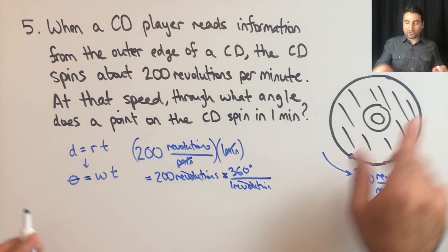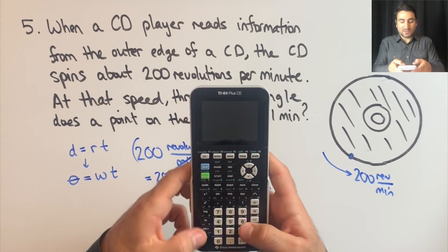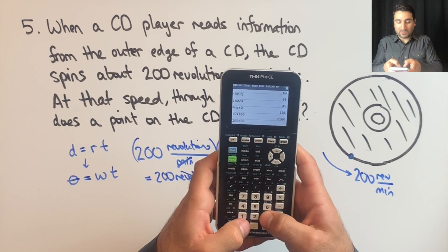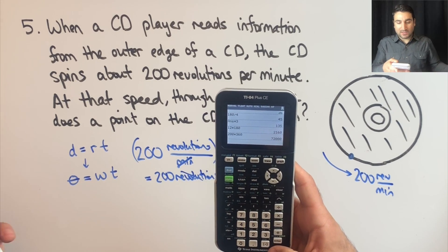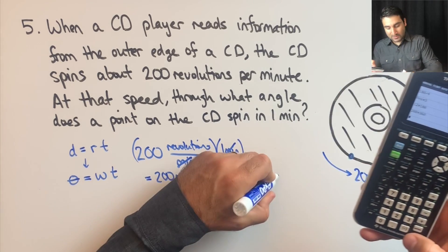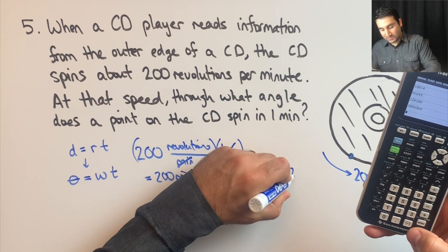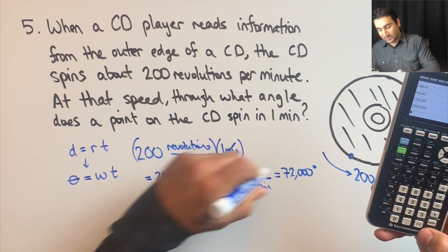and that will be 200 times 360, is 72,000 degrees.